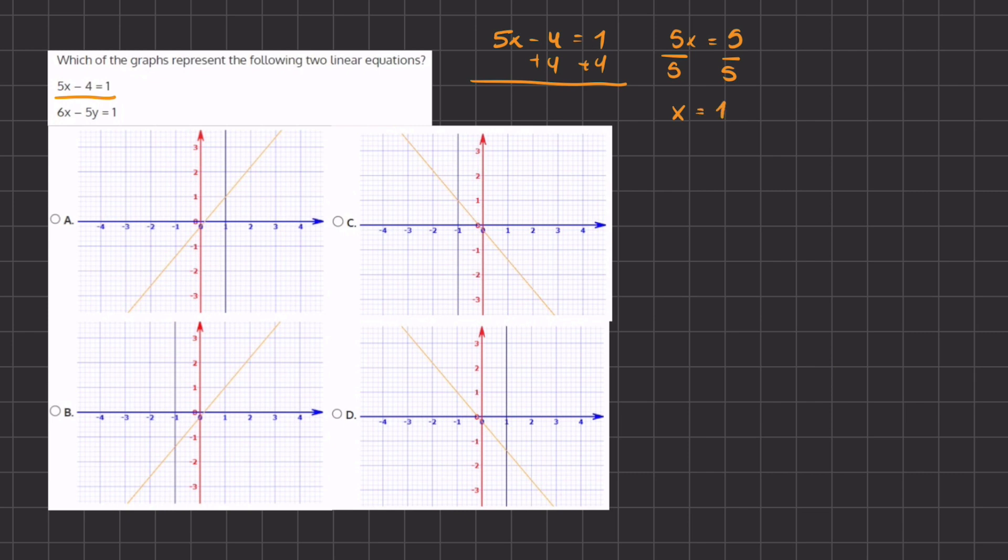Therefore, on our graph, we should find a line that is parallel to the y-axis that represents all the y values for when x equals 1. And therefore, C and B will be eliminated because we want to find this line over here that is represented by answer A and D. So for all the values of y, x will always equal 1.